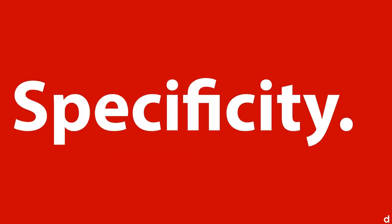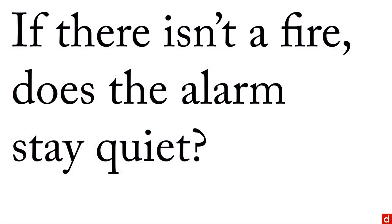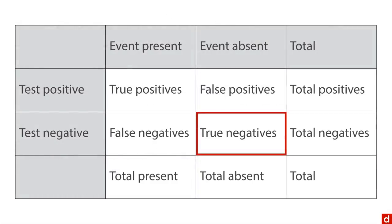Specificity, on the other hand, is sort of the flip side of this. If there isn't a fire, does the alarm stay quiet? This is where you're looking at the ratio of true negatives to total absent events, where there's no fire and the alarms aren't ringing. And that's what you want.